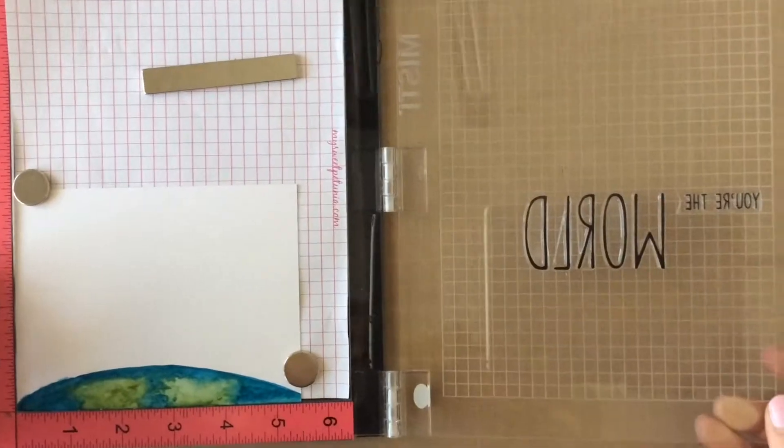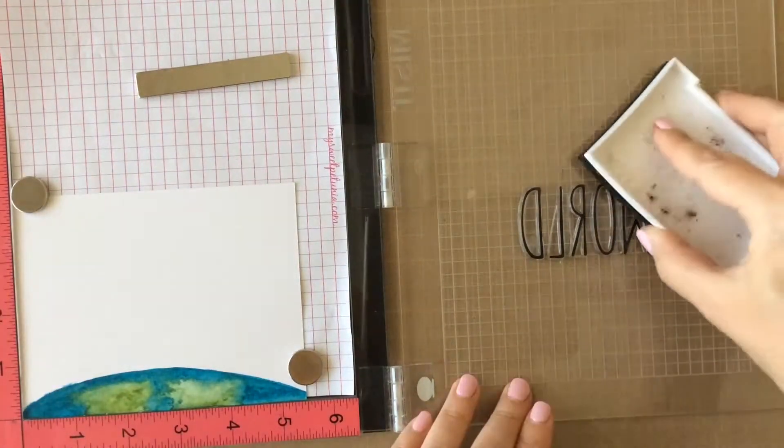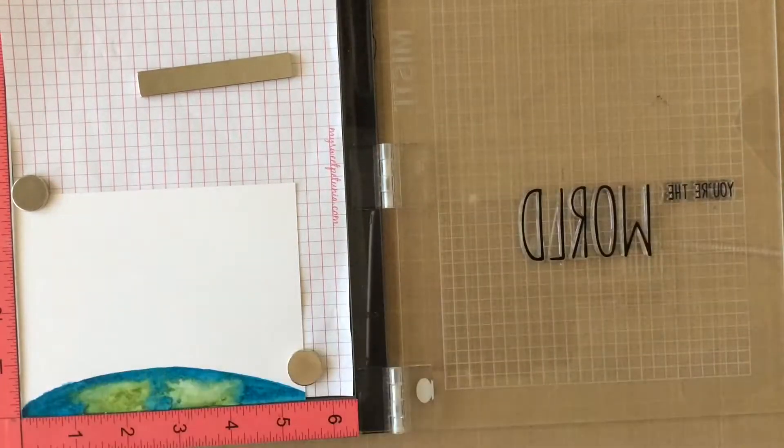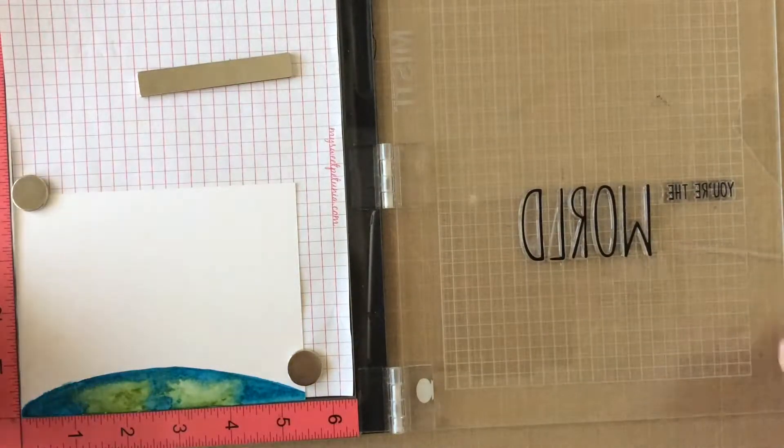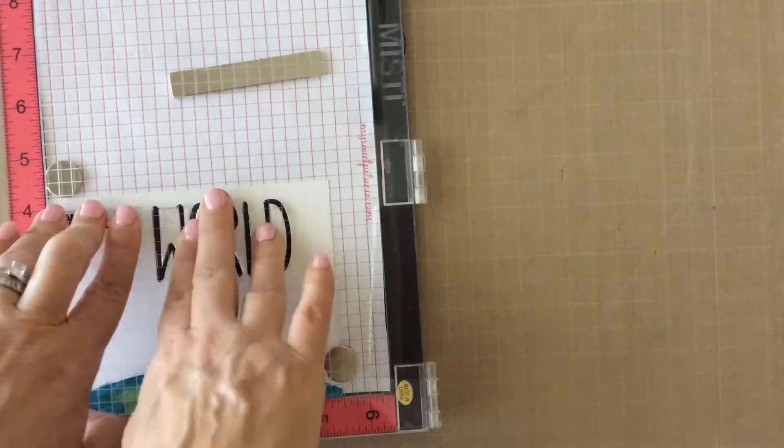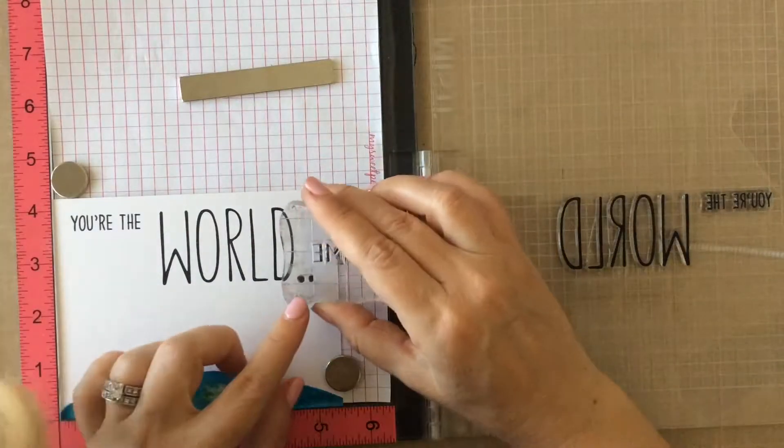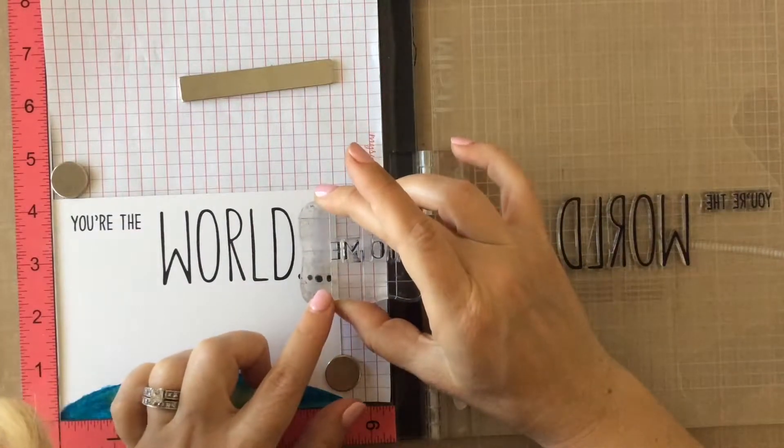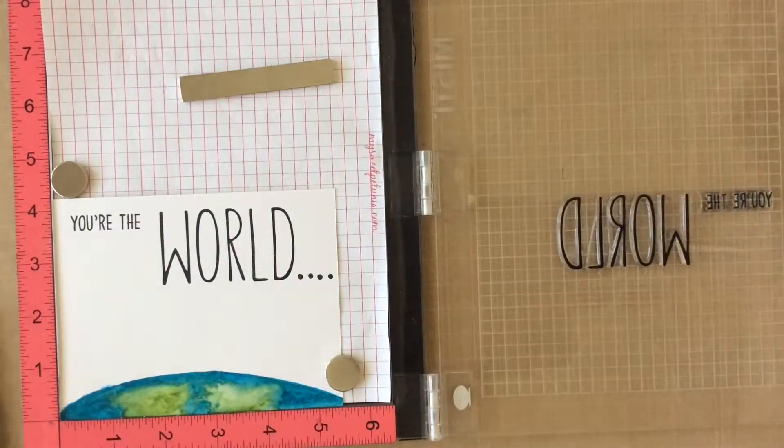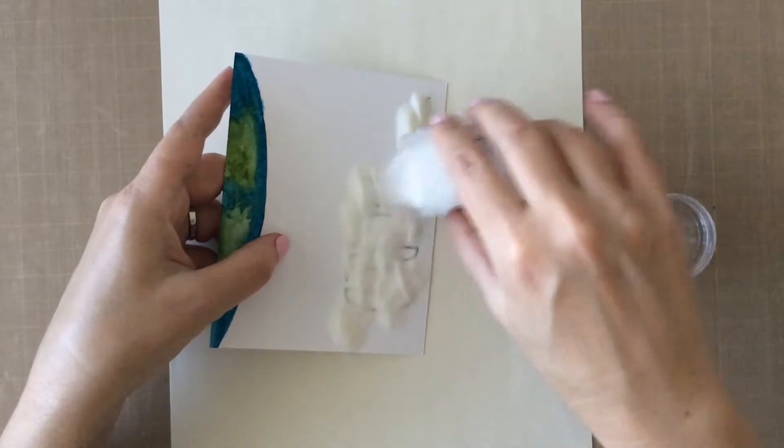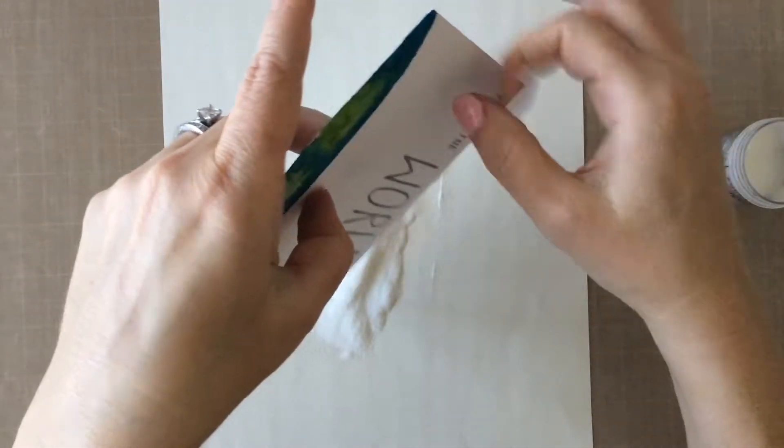And since our world is pretty much dry here, I'm going to go ahead and move on with the sentiment. So I already created the sentiment world with the cutaway alpha stamp set. I'm going to use some VersaFine Onyx Black. And that you're the is the sentiment from the cat meow set. So I'm just creating the you're the world. And there are a couple of dots in that cutaway alpha set. And I'm just using those with a regular block to add those. As you can see, I didn't line that up perfectly, but this is a handmade card. I'm just going to say it's part of the beauty.